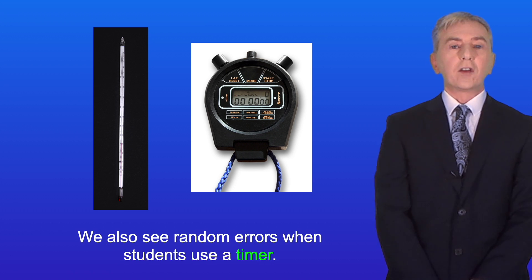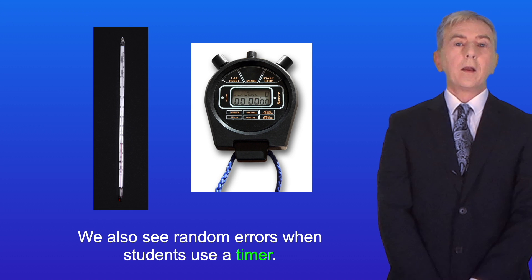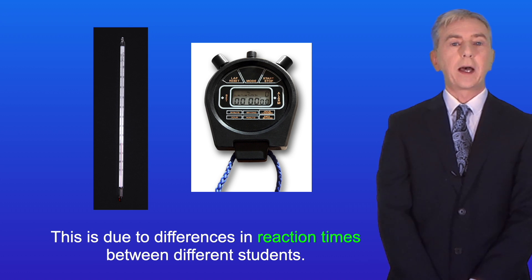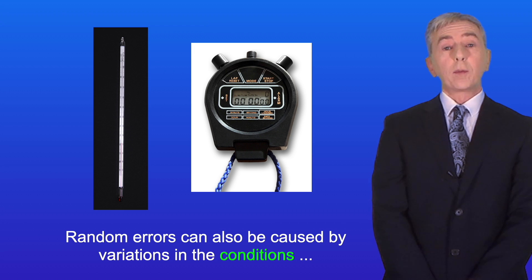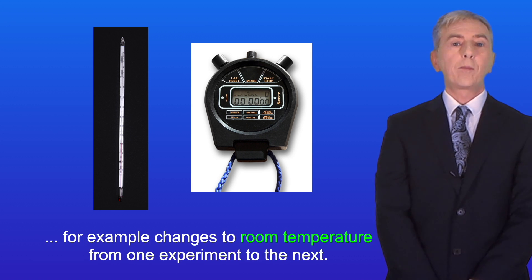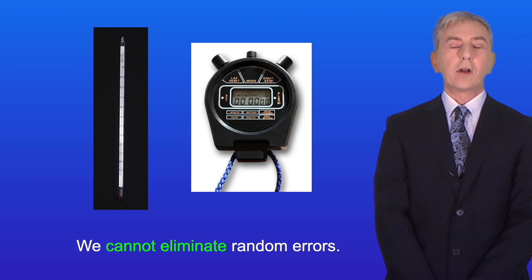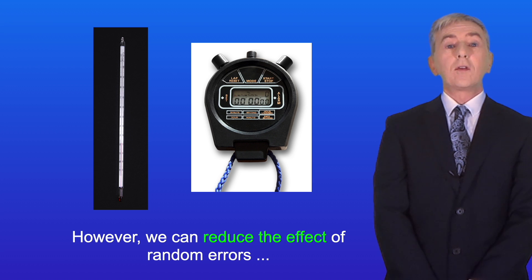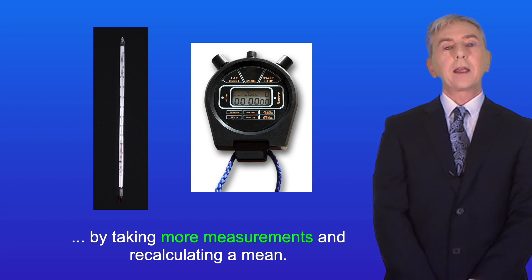We also see random errors when students use a timer. This is due to differences in reaction times between different students. Random errors can also be caused by variations in the conditions, for example changes to room temperature from one experiment to the next. Now we cannot eliminate random errors. However, we can reduce the effect of random errors by taking more measurements and recalculating a mean.